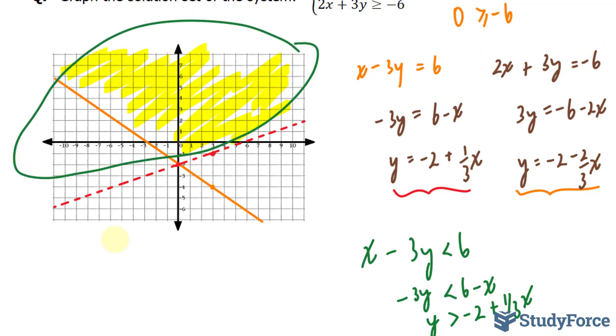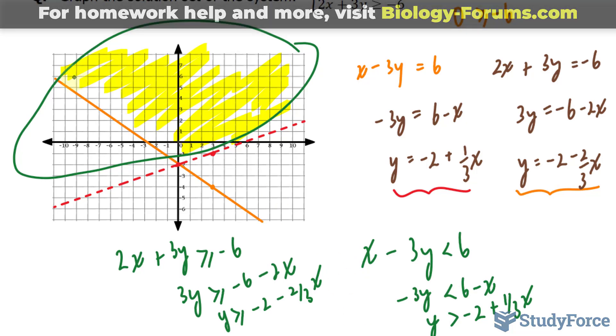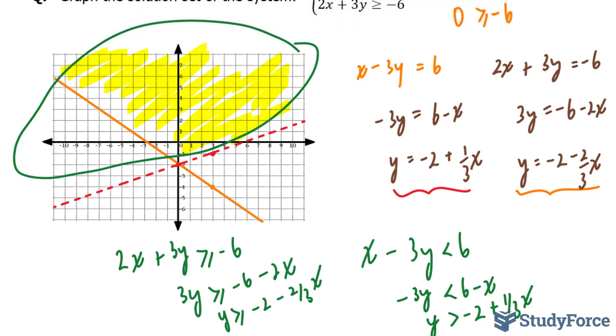In doing the same thing for this one, we have 2x plus 3y, and that's greater or equal to negative 6. If I solve for y, 3y is greater or equal to negative 6 minus 2x, dividing both sides by 3, I get negative 2 minus 2 over 3x. This is telling me that for my orange line, y is greater than the line itself. So all of this region. Now the region that both have in common is what was highlighted when we did the test point.